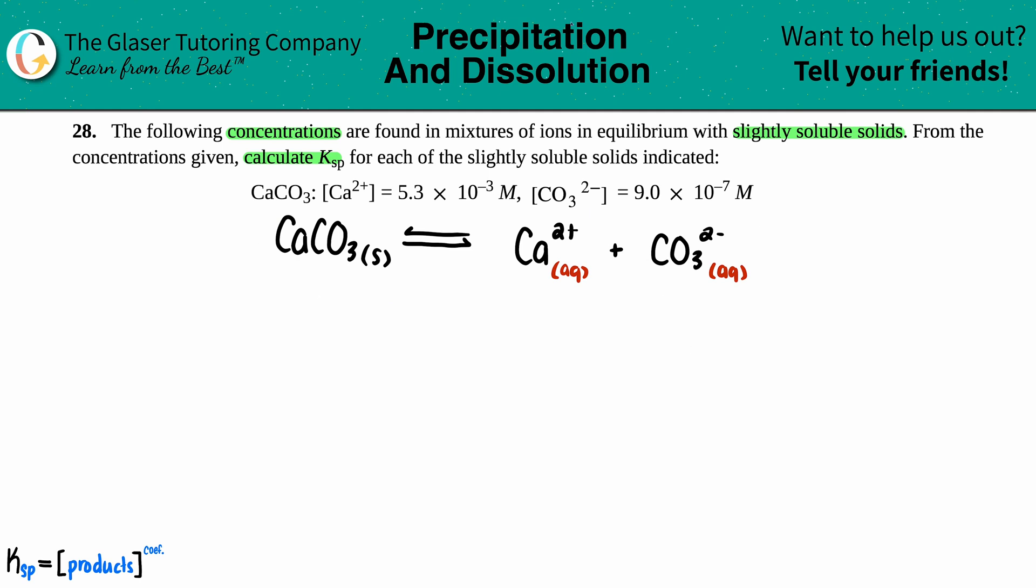Let's just list out what numbers they tell us. For the calcium, they told us that was 5.3×10⁻³ M, and for the carbonate, they told us that was 9.0×10⁻⁷ M.